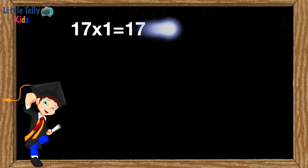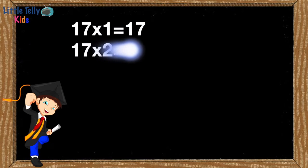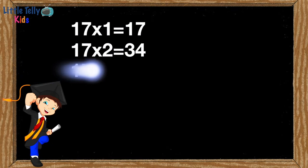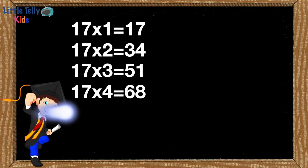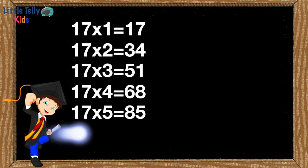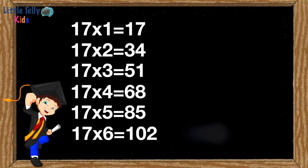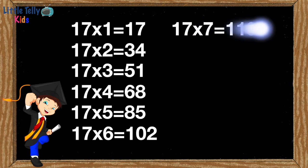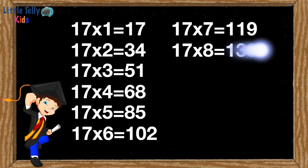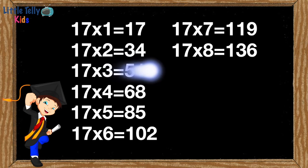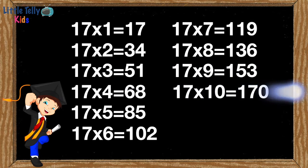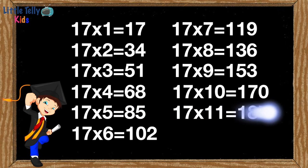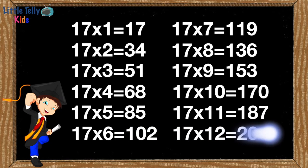17 ones are 17. 17 twos are 34. 17 threes are 51. 17 fours are 68. 17 fives are 85. 17 sixes are 102. 17 sevens are 119. 17 eights are 136. 17 nines are 153. 17 tens are 170. 17 elevens are 187. 17 twelves are 204.